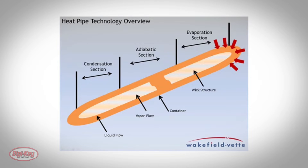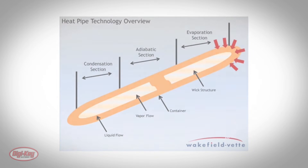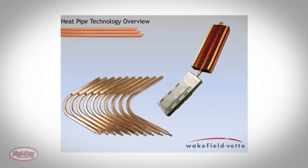The larger the diameter, the more heat that can be transported, but the longer the length, the less capable the pipe. Heat pipes can be bent and/or flattened as needed, but such modifications reduce the amount of heat that can be transported.